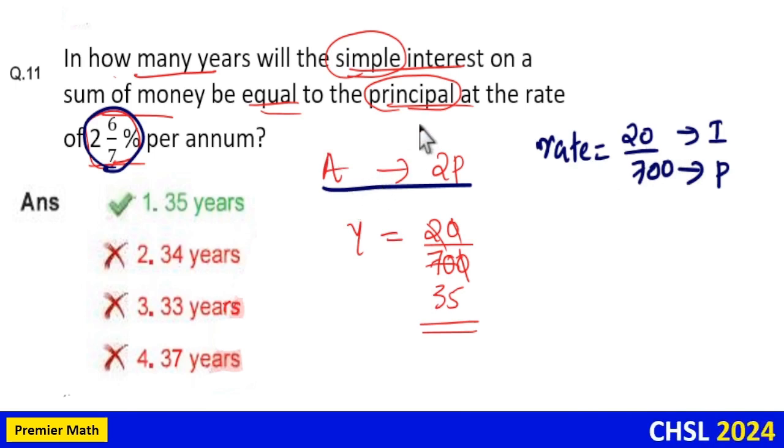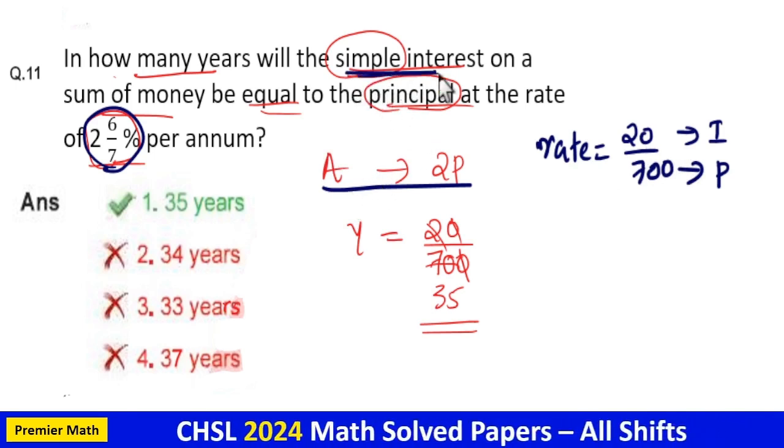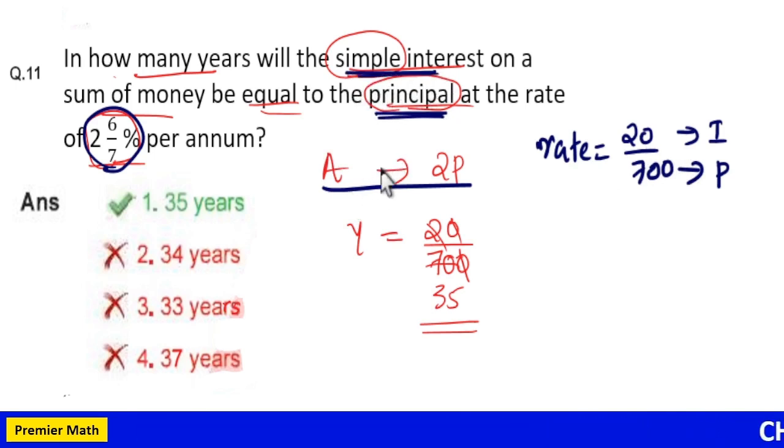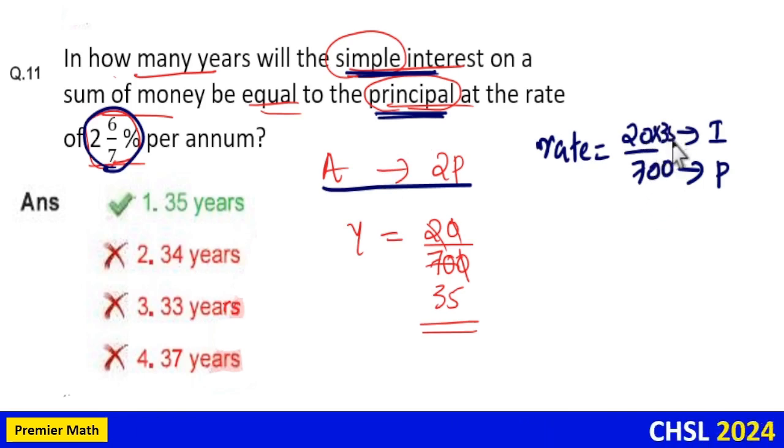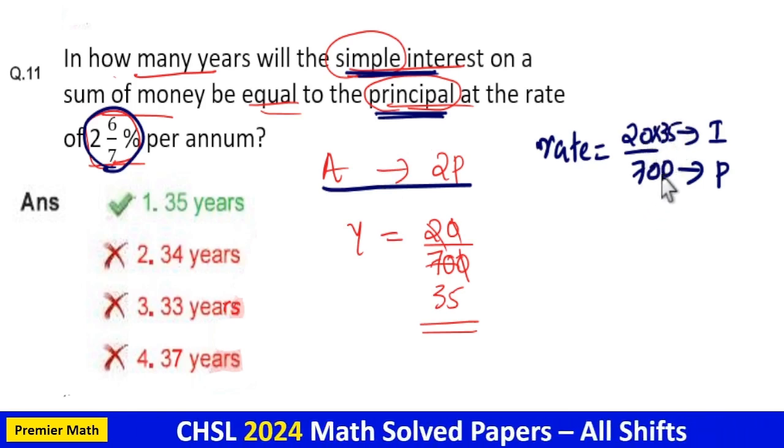Now question says simple interest is equal to the principal, which means this 20 part should be equal to 700 in 35 years. 20 into 35 is 700.